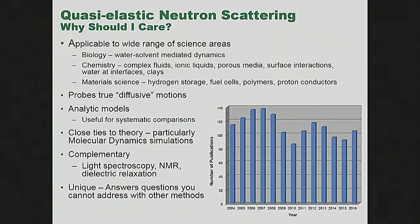Just for fun, here is a set of publications by year using the search terms 'neutrons and quasi-elastic' — removing the high energy physics ones. Last year there were a little over 100 papers, so about 100 papers a year get published with those simple search terms.